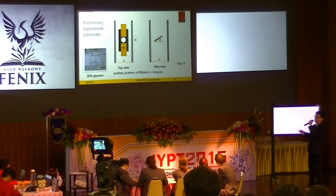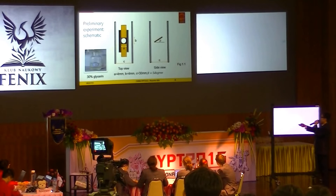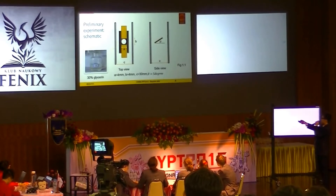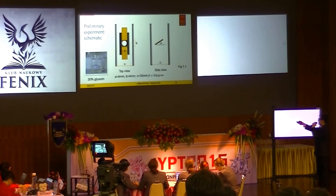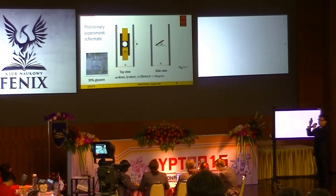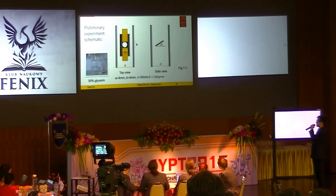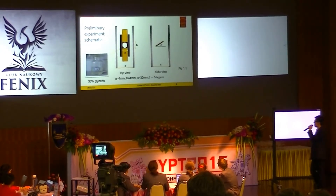Here's the schematic — you can see these are two polyplates and these are two electrolysis electrodes, and here's the film. In the preliminary experiment, we used 30% glycerin. We also tilted the film slightly to eliminate the effect of gravity.